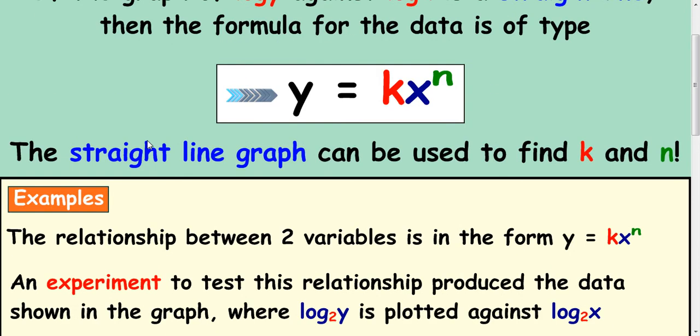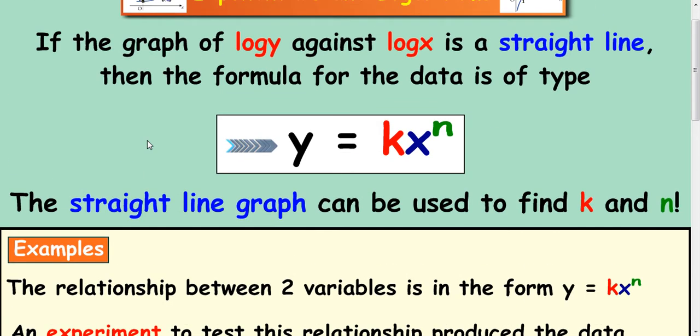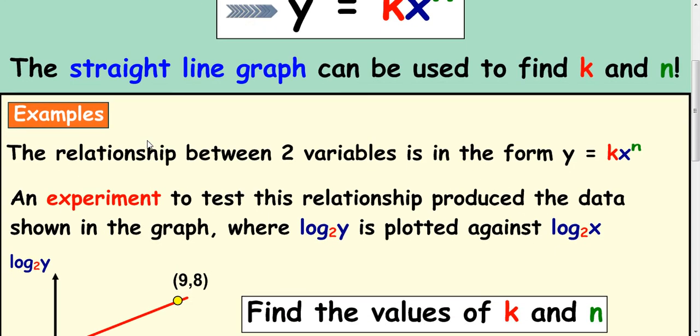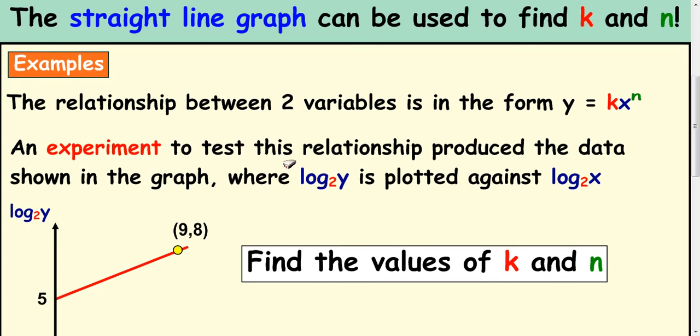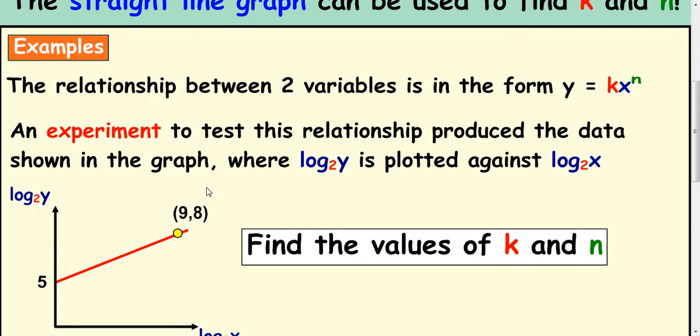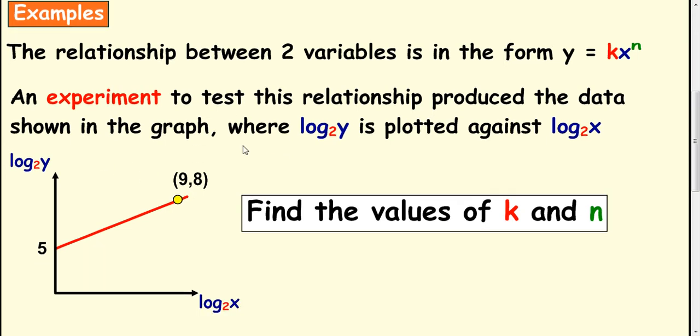Now, let's look at a question you might be asked. The relationship between two variables in the form y equals kx to the n. An experiment to test this relationship produced the data shown in the graph. So, the original experiment would have produced an exponential, but taking logs and plotting them against each other formed a straight line.